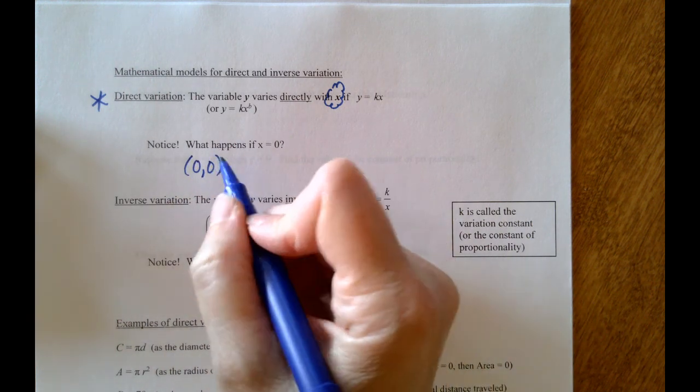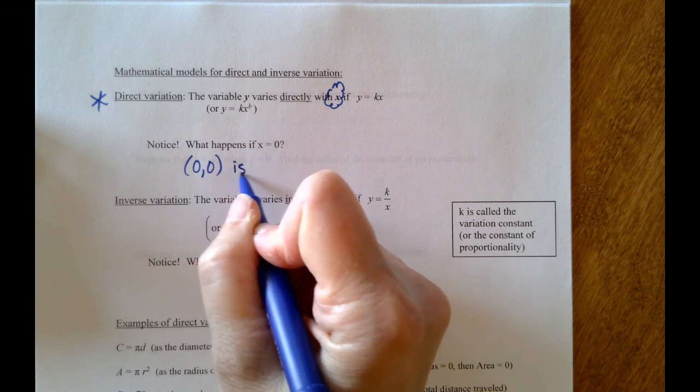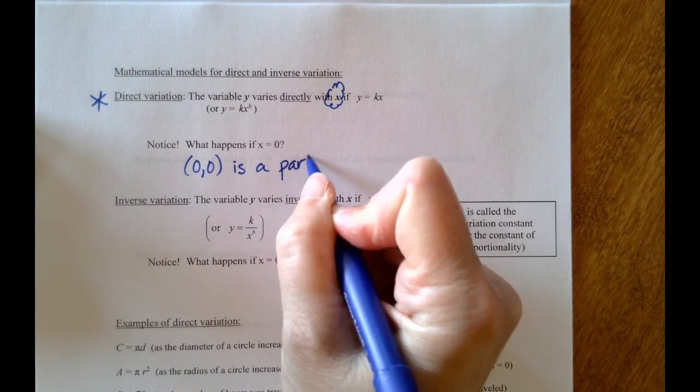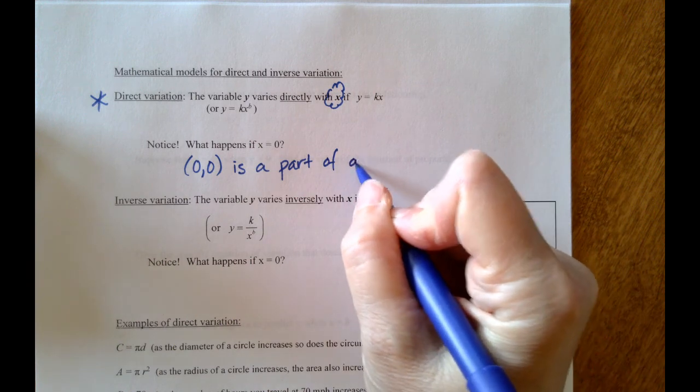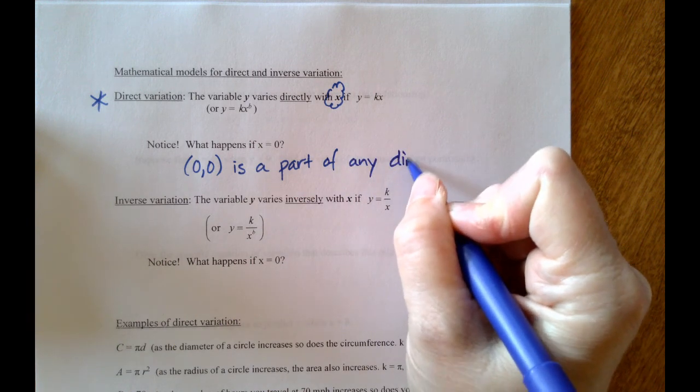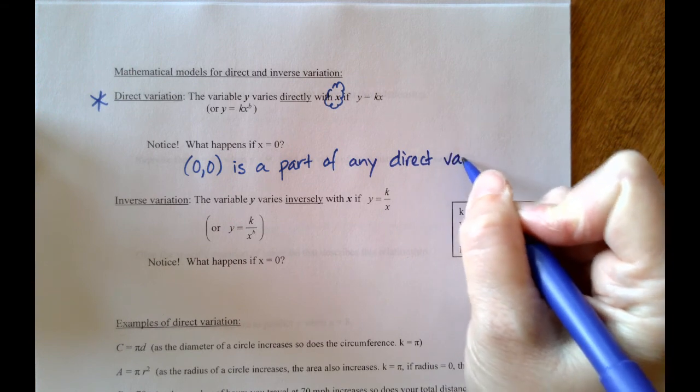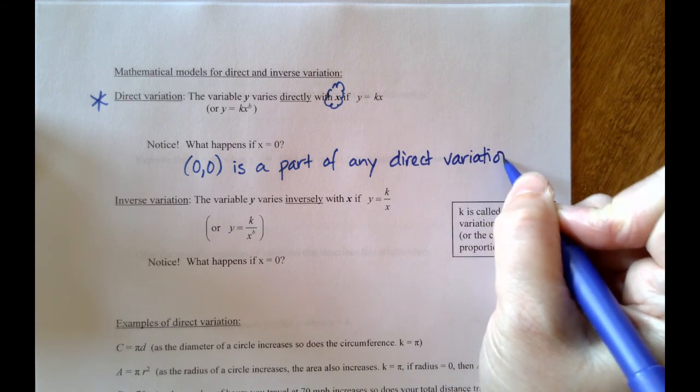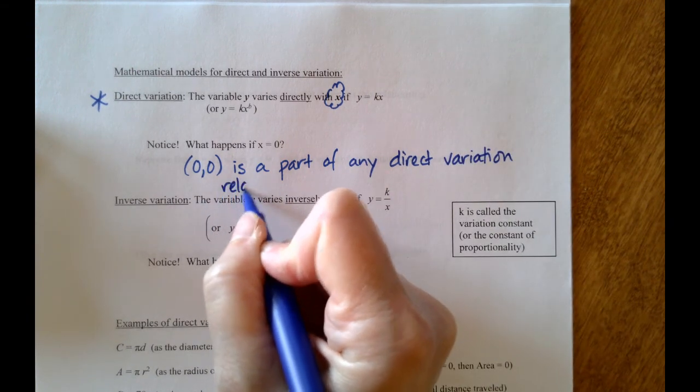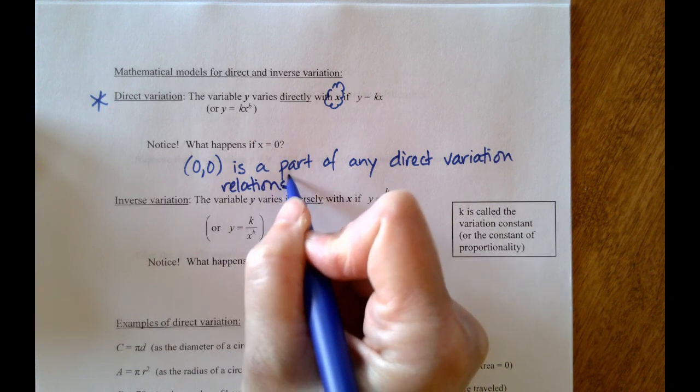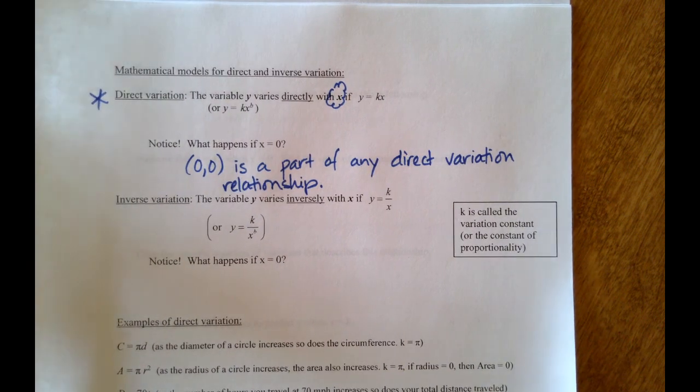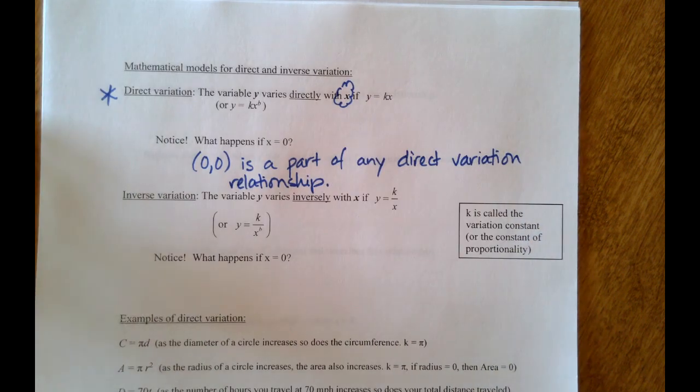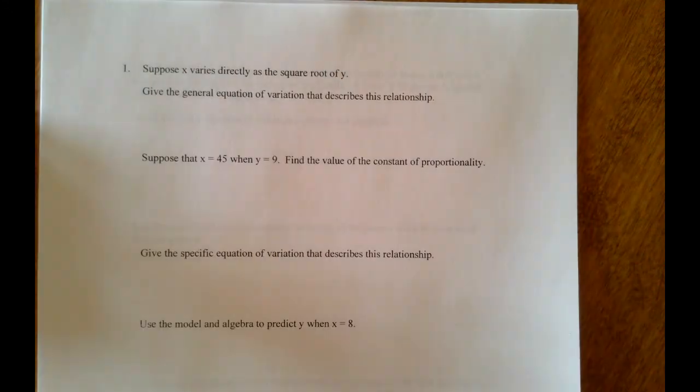So the point (0,0) is a part of a direct variation relationship. Okay, so that's direct variation.